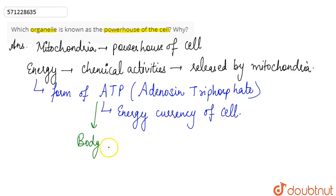...for making new chemical compounds and for the mechanical work done by the body. This is why we call mitochondria the powerhouse of the cell, because it releases energy in the form of ATP.